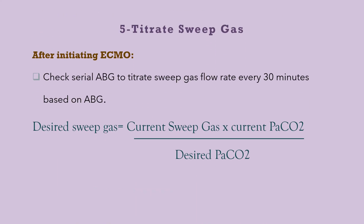The fifth point in initiating ECMO is titrating sweep gas. After initiating ECMO, sweep gas at the starting point should be equal to predicted ECMO flow. After that, check arterial blood gas every 30 minutes to titrate sweep gas based on the result. The desired sweep gas equals current sweep gas multiplied by current PCO2 divided by desired PCO2. This allows us to decide how much sweep gas is needed.